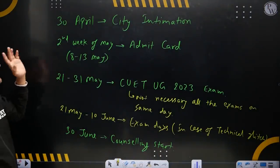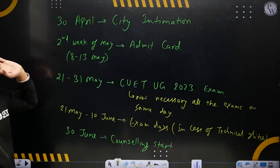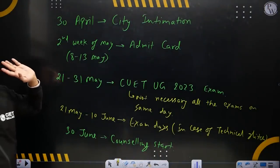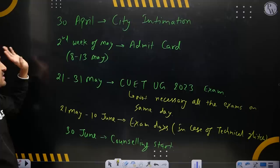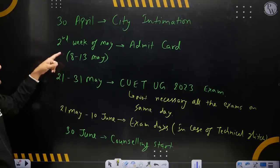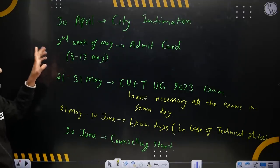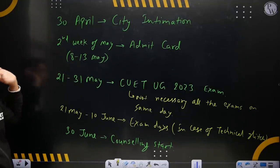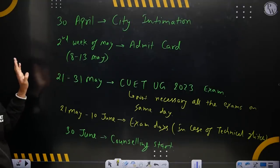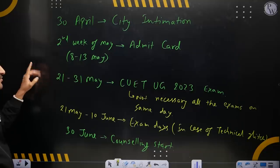First of all, when will you get your city information? The city intimation will come on April 30th. Then in the second week of May you will get your CUET admit card for CUET UG 2023.